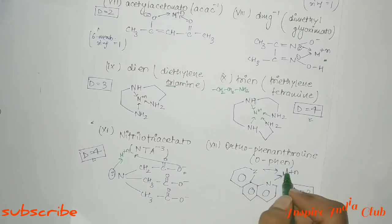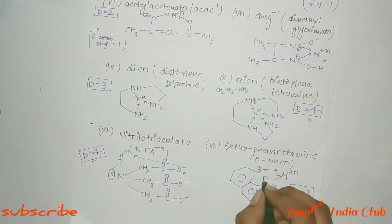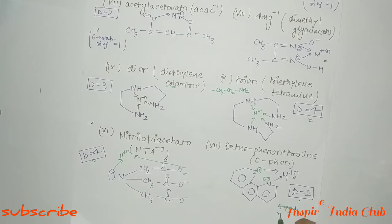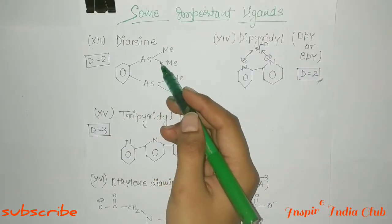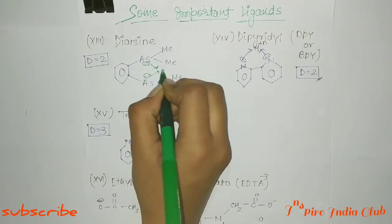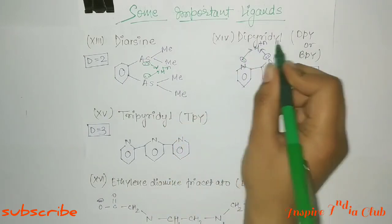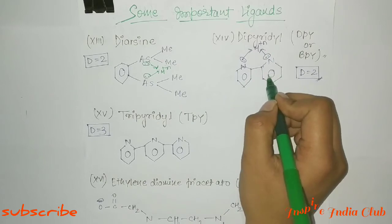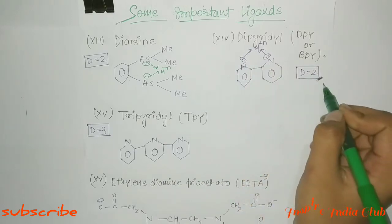Next is ortho-phenanthroline (o-phen). Its structure has a lone pair on nitrogen which donates to the metal. Denticity is 2 and 5-member ring count is 1. Similarly, diarsine also has a lone pair and donates to the metal, giving denticity 2 and 5-member ring count 1. Next is dipyridyl, written as 'dpy'. Both nitrogen atoms of dipyridyl donate, forming a 5-member ring, so denticity is 2.